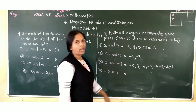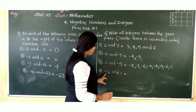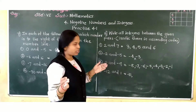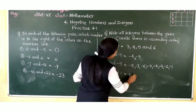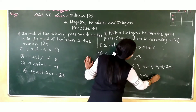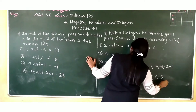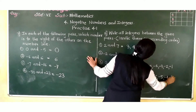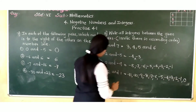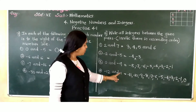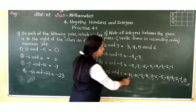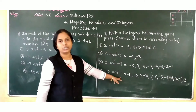Next: minus 12 and 1. Between these two, which integers will come? Minus 11 comes first after minus 12, then minus 10, minus 9, minus 8, minus 7, minus 6, minus 5, minus 4, minus 3, minus 2, minus 1, and 0 also. Because after 0, the number 1 will come, so 0 is between minus 12 and 1. These are the integers between these two numbers.